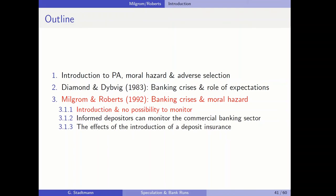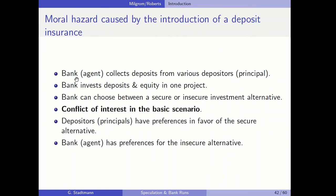Welcome everybody to this lecture where I would like to talk about the Milgram-Roberts banking crisis model. In this model, moral hazard will play a role. There is a bank which is the agent, and the bank collects deposits from various depositors. The depositors are the principals. The bank will invest the deposits as well as its own equity in one project. The bank can choose between a secure and insecure investment alternative, and there is a conflict of interest in the basic scenario: the depositors prefer the secure alternative while the bank prefers the insecure alternative.